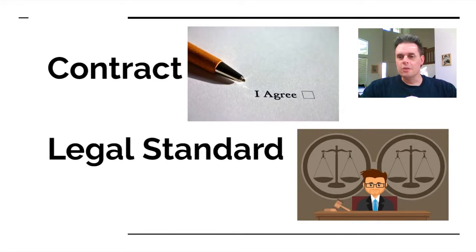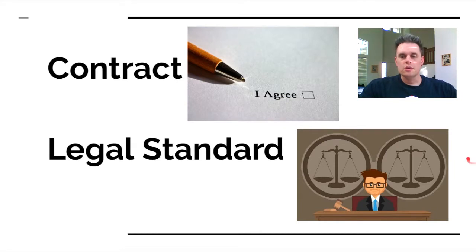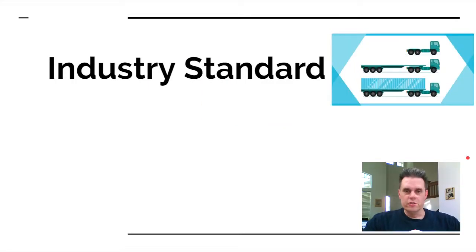A legal standard is something that's set by the court — it's a court precedent. It's usually a decision by a judge about a certain law from a court outcome, and that judge will make a ruling. That ruling becomes what's called a precedent, and the precedent is what people have to adhere to. An industry standard is something that the industry has to adhere to or agrees to adhere to. There's no inherent legal force in an industry standard.